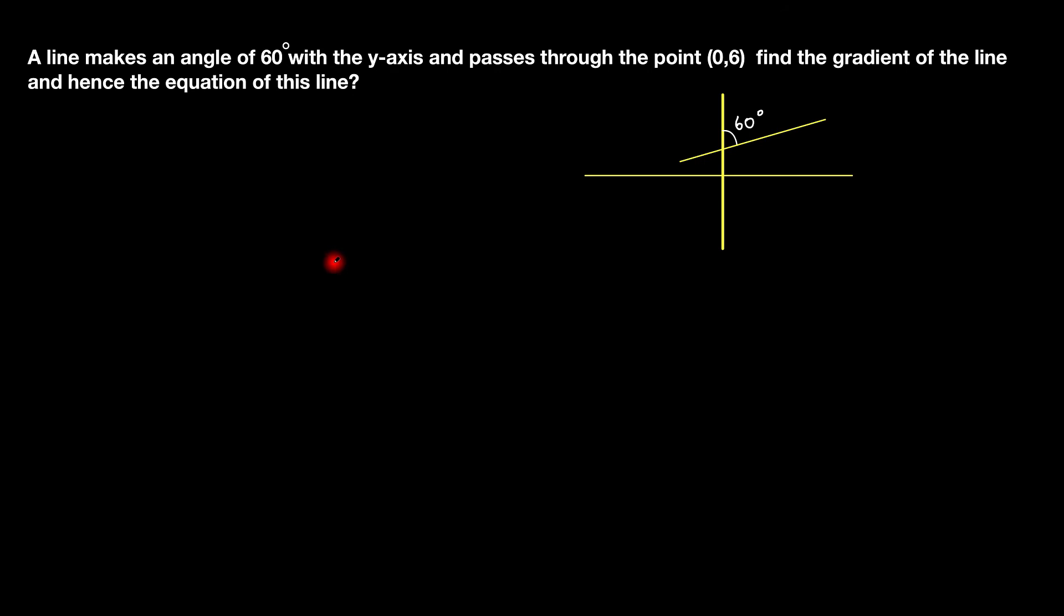Hi guys, welcome to Excel and Mathsci. Today we'll be looking at this question which says a line makes an angle of 60 degrees with the y-axis and passes through the point (0,6). Find the gradient of the line and hence the equation of this line.